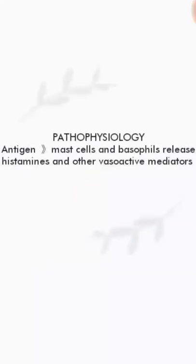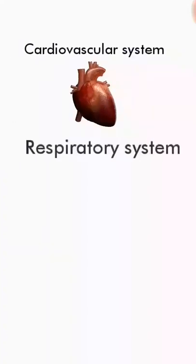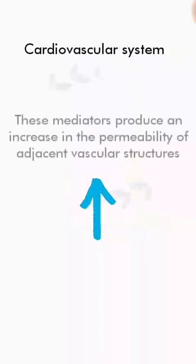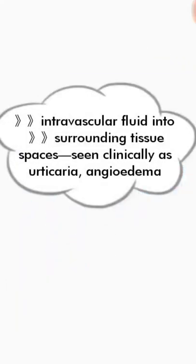After the patient is exposed to the antigen, it leads to mast cell degranulation and basophil degranulation. This leads to the release of histamine and other vasoactive mediators, which act on multiple systems including the cardiovascular system, respiratory system, gastrointestinal tract, and skin. When these mediators act on the cardiovascular system, they increase vascular permeability, cause vasodilation, and lead to a shift of fluid from the intravascular to the extravascular system, resulting in hypotension and tissue edema.